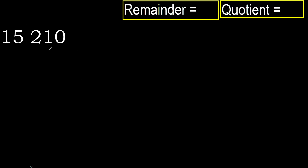210 divided by 15. 2 is less, therefore next. 21 is not less, therefore with 21: 15 multiplied by which number is nearest to 21, but not greater?